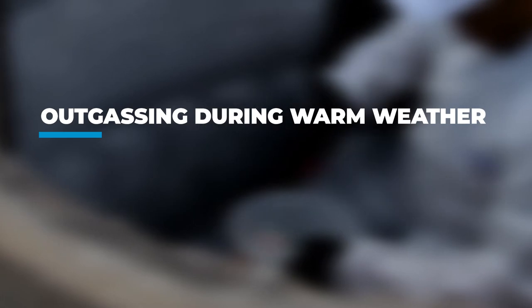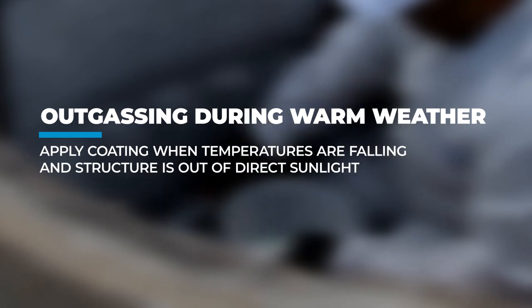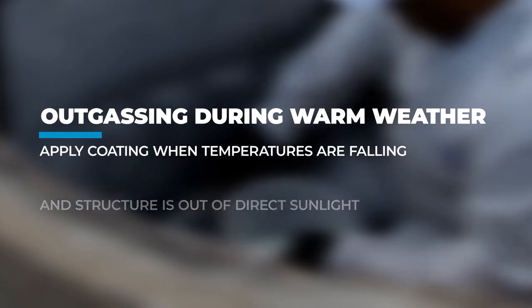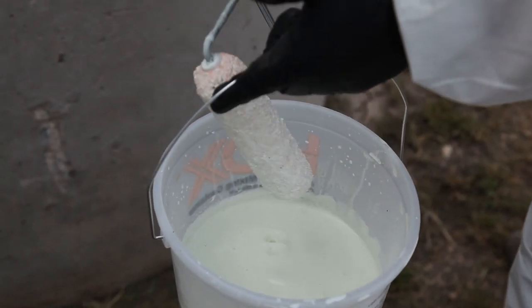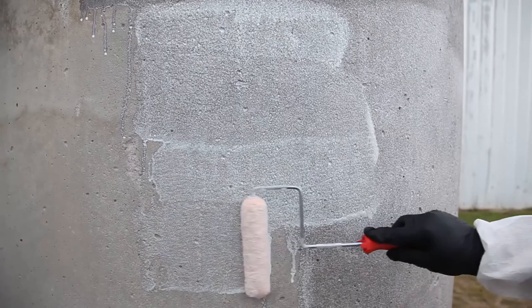During warm weather, outgassing can be a concern. To control outgassing, it is best to perform the coating when the temperature is falling, and the structure is out of direct sunlight. A pinhole-reducing penetrating primer can also be used to help minimize the presence of pinholes or holidays in the coating.